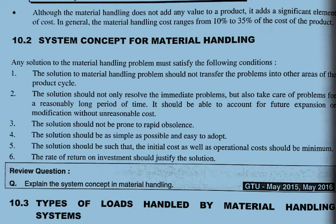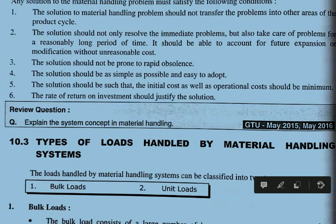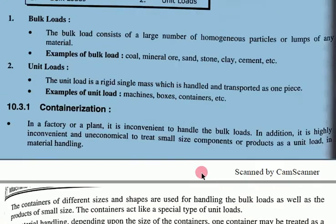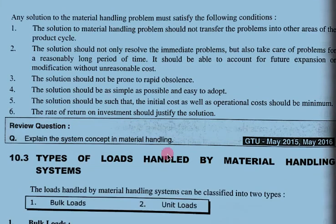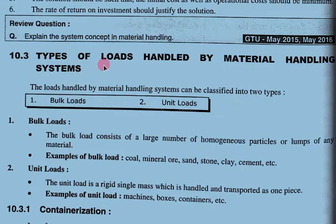Third, the solution should not be prone to rapid obsolescence — it should not become outdated, so we must use advanced approaches for the material handling system. Fourth, the solution should be as simple and easy to adopt as possible. Fifth, the solution should be such that both the initial cost and operational cost are minimum.